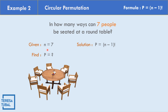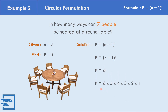We replace n by 7: P equals (7 minus 1) factorial, which equals 6 factorial. The equivalent of 6 factorial is 6 times 5 times 4 times 3 times 2 times 1. Multiplying these gives P equals 720 ways that 7 people can be seated at a round table.